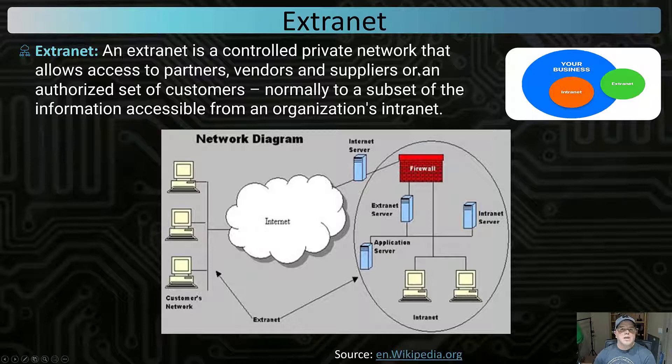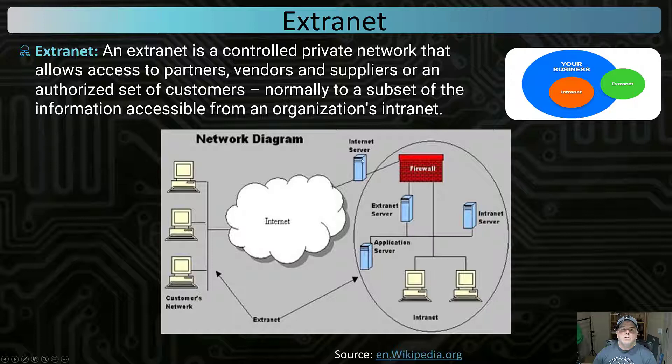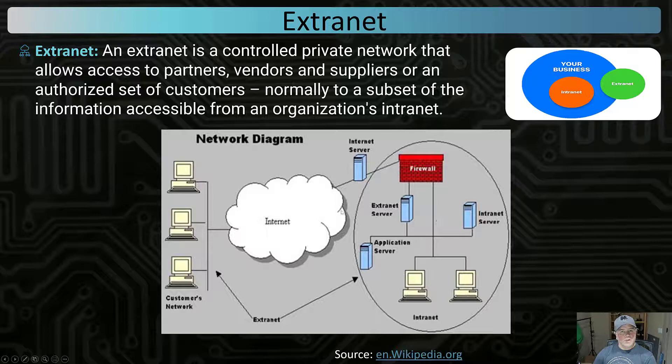Finally, there is an extranet: a controlled private network that allows access to partners, vendors, suppliers, or an authorized set of customers. A great example is Walmart — they connect their network via internet-available servers that sit outside the network, connecting to customers and vendors. If you want to do business with Walmart, you have to run their supply chain software so data can flow in real time. The intranet comprises inside the business; the extranet can be both inside and outside.